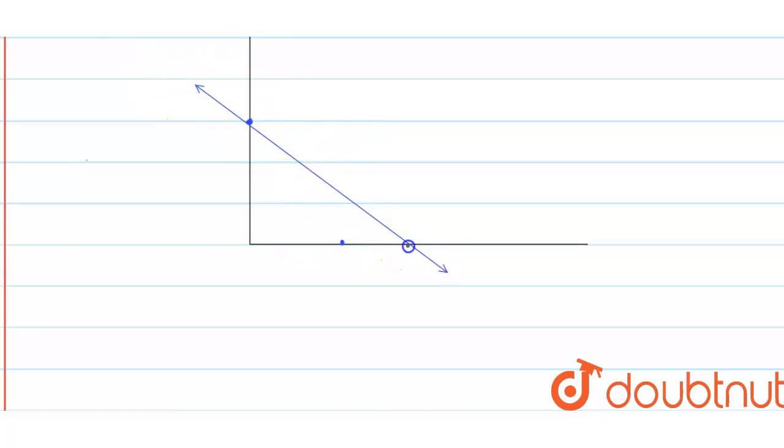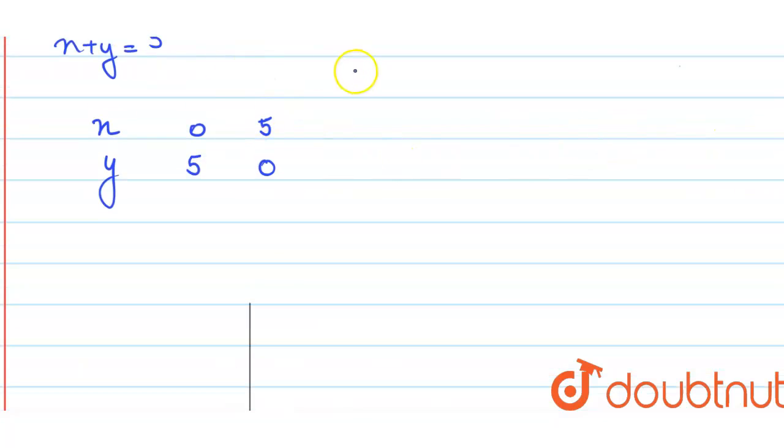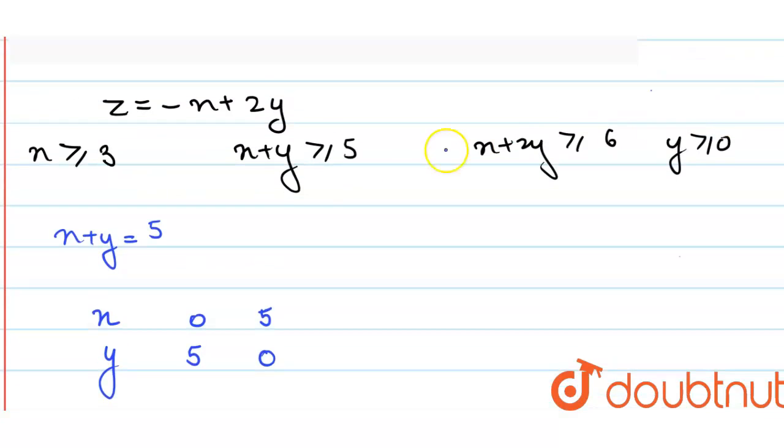The point 5, 0 and the point 0, 5. Now if I put 0, 0 in this equation x plus y is greater than or equal to 5, then it comes out to be false. Therefore, it will point away from the origin.